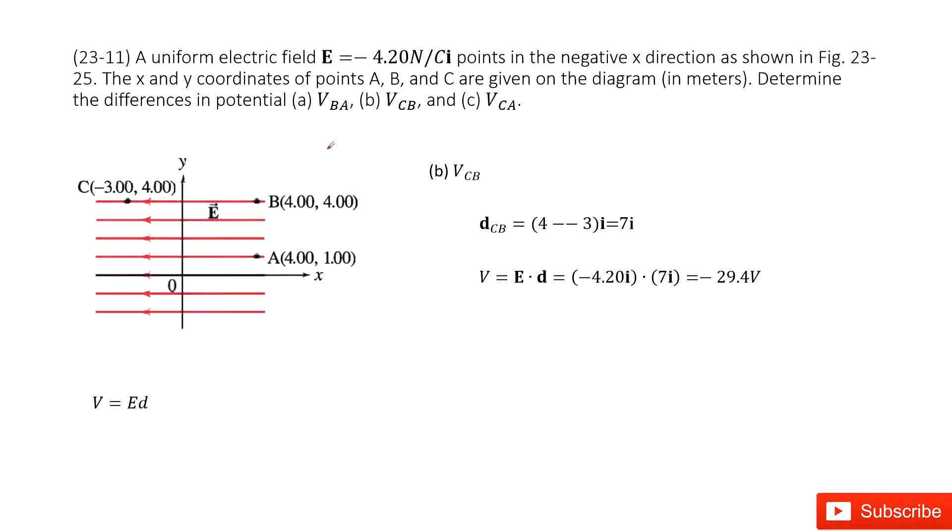Second case, we need to find the potential difference B to C. So we first write the displacement C to B. Use the final position C minus initial position B. We get the vector there.